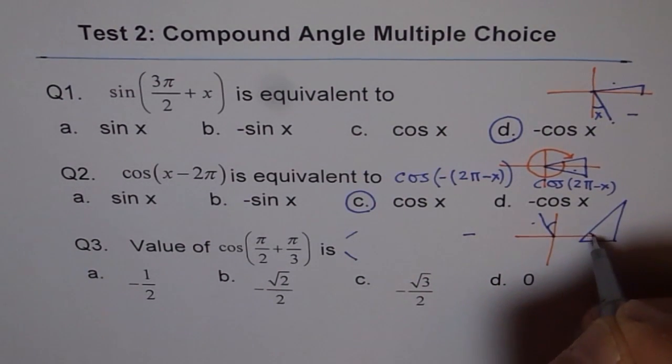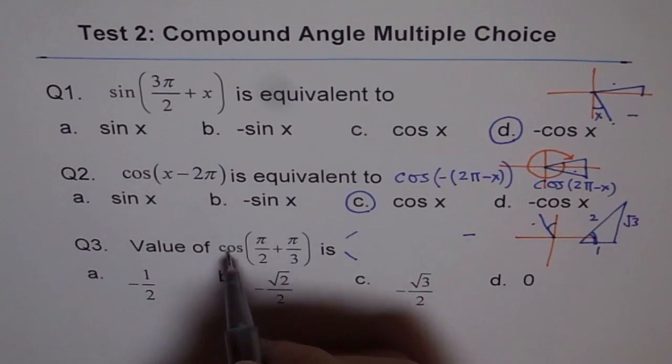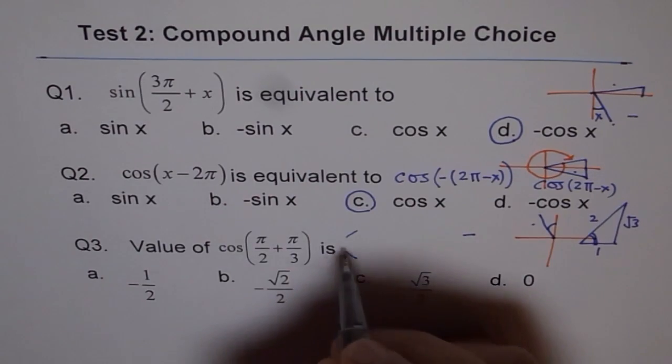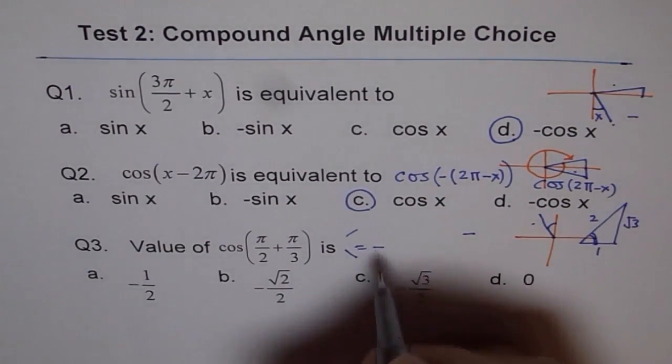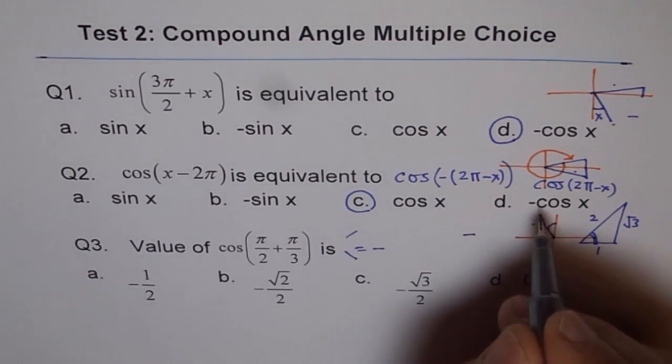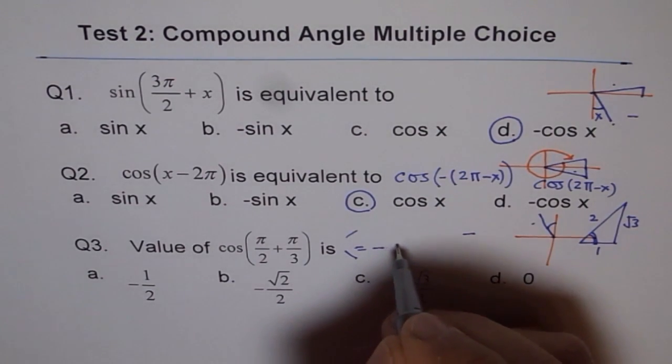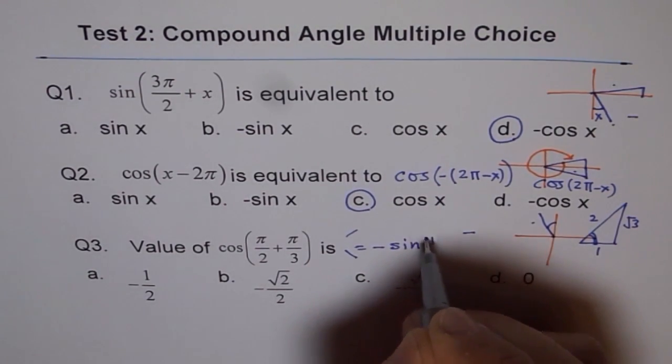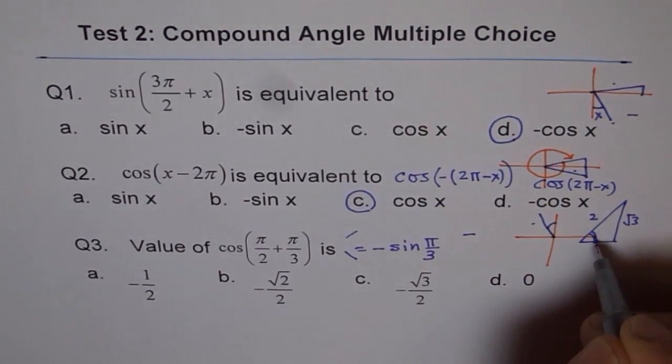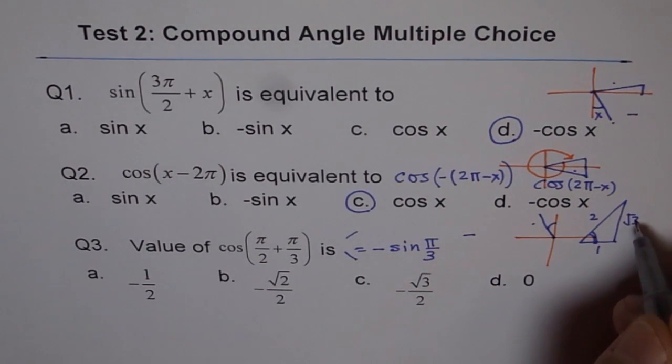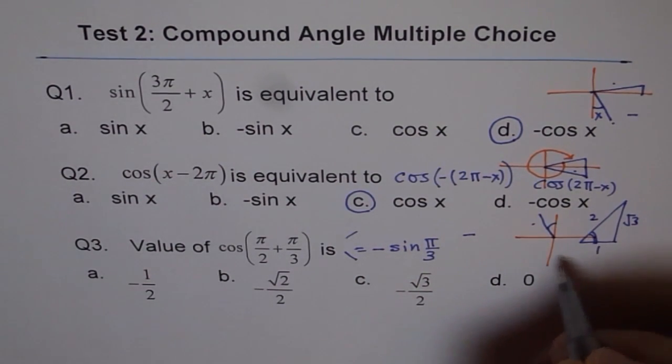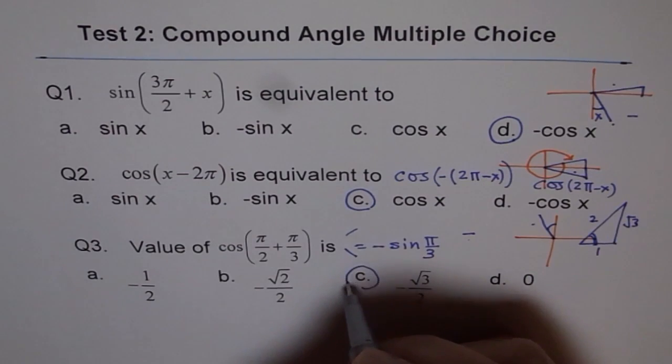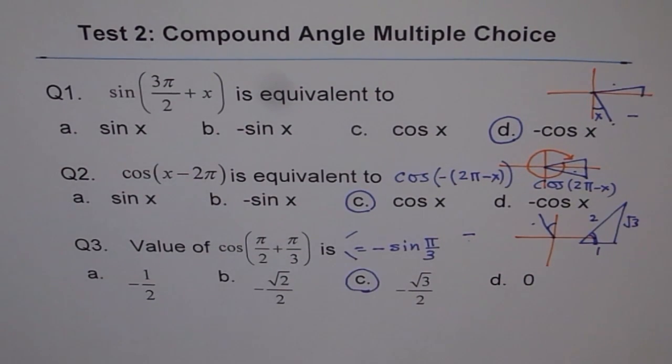For this, your value is 2 square root 3. Cos π/2 plus π/3 is actually equal to minus, because cos is negative in this quadrant, minus sin π/3. For π/3 sin, the answer is square root 3 over 2 with minus sin. Therefore, we get C as our answer.